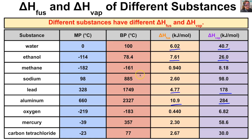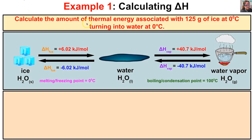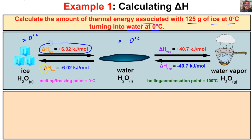Now let's work on calculations. In the first example, we calculate the amount of thermal energy associated with 125 grams of ice at zero degrees Celsius turning into water at zero degrees Celsius. There is no change in temperature but there is a change in state of matter, so this is a heat of fusion problem. We start with 125 grams of H₂O solid.